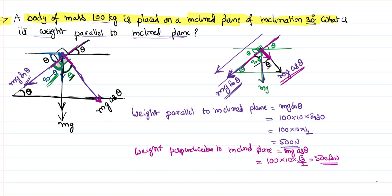So the total weight mg equals 100 × 10 = 1000 newtons. This 1000 newtons is resolved into two components: 500 newtons parallel to the inclined plane and 500√3 newtons perpendicular to the inclined plane. When you add these two components back as vectors, you should recover the original weight. The weight vector can be written as 500 î plus 500√3 ĵ.